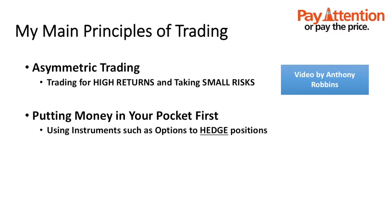These are the two principles of trading that I apply. The first is asymmetric trading. Asymmetric trading refers to a trading method whereby we trade for very high returns and risk very little. Unlike unsuccessful traders, very successful traders risk very small amounts. They make it up in returns that are many times over what they risk — a reward-to-risk ratio of about 5 times, 10 times, or even higher. We're going to take a look at a video by Anthony Robbins which explains this concept.